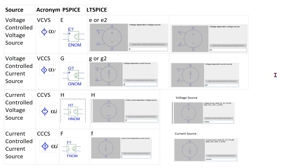In this video we will look at how to simulate dependent sources using PSPICE. The four dependent sources are available in PSPICE as part names E, F, G, and H. Part name E is for voltage controlled voltage source. Part name F is current controlled current source. Part name H is current controlled voltage source. Let's take a look at two examples which illustrate how to simulate dependent sources in PSPICE.